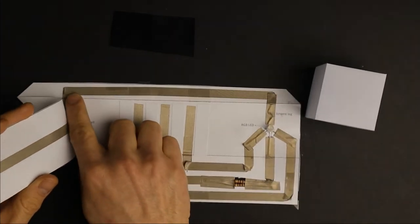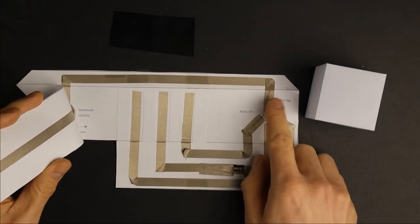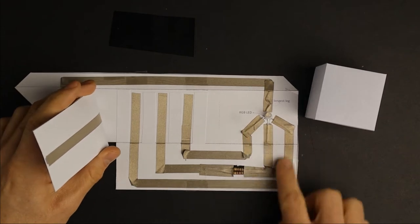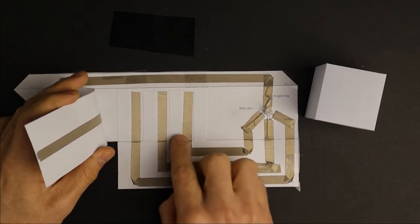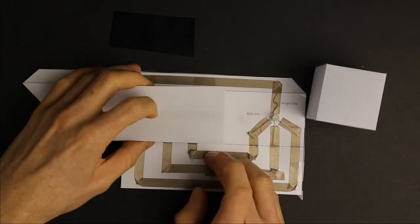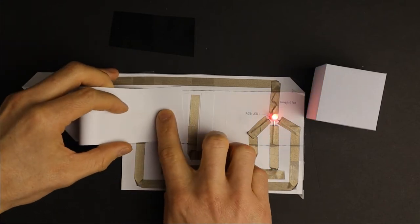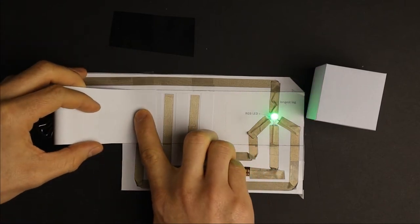There's a battery connected to an RGB LED. These three tracks connect back to the battery if this fold-over switch is pressed down. Depending on where you press down, the RGB LED lights up blue, red, or green.